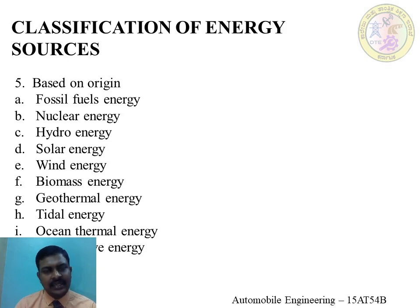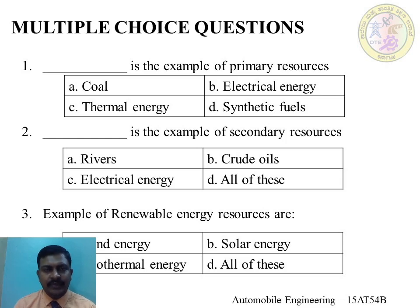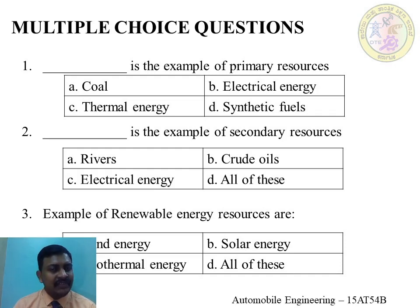To assess the level of understanding from today's session, we will go through a multiple choice questions test. I have framed a few MCQs with four options each, and you have around 20 to 30 seconds to read each question and mark the correct response. The first question is: dash is the example of primary resources. Recall the definition of primary resources to select the correct answer.